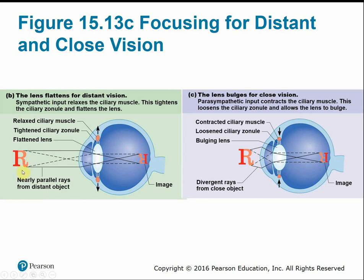From a distant object, light rays have enough distance and time to come in in a parallel formation. Whereas in close vision, light rays come in from different angles. For closer vision, the lens would bulge more — the muscles relax and let the lens relax as well.